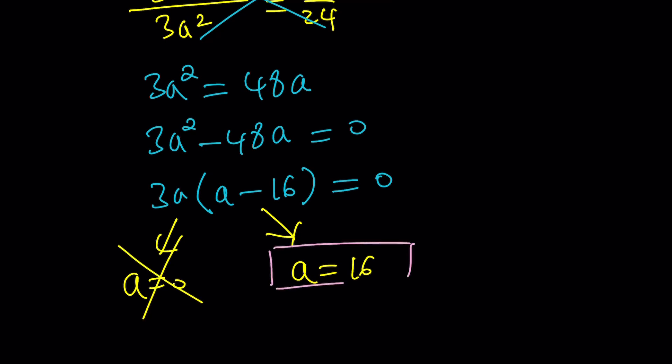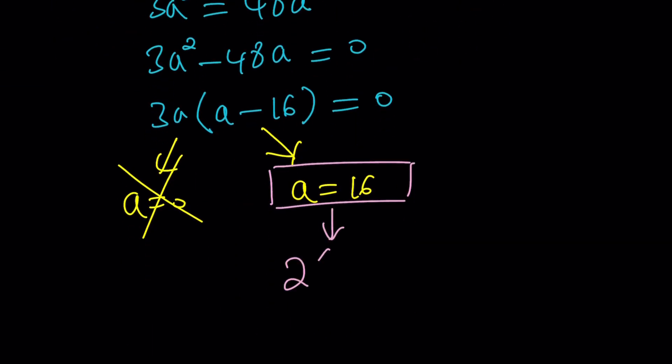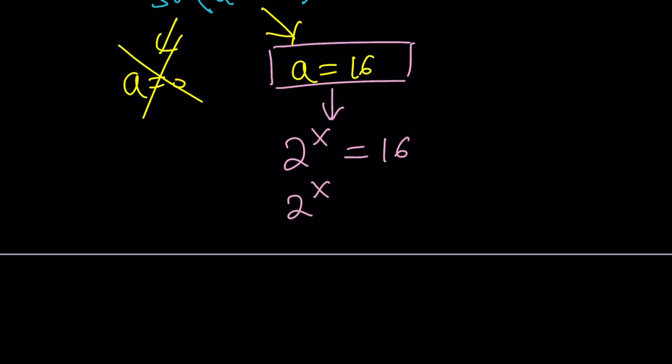So a = 1/16 is the only solution we have. What is a? A is 2^x. Awesome. If 2^x = 1/16, 1/16 is 2^(-4). In case you didn't know. And from here we get x = -4 as the only solution to this equation. All right? So that is the first method.